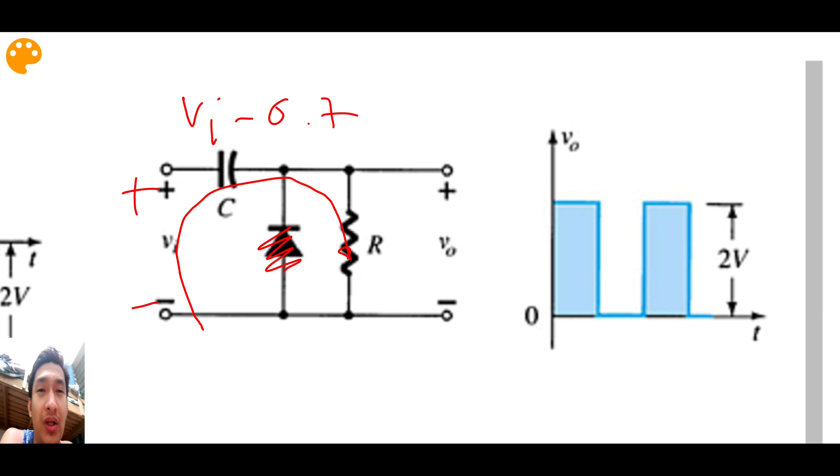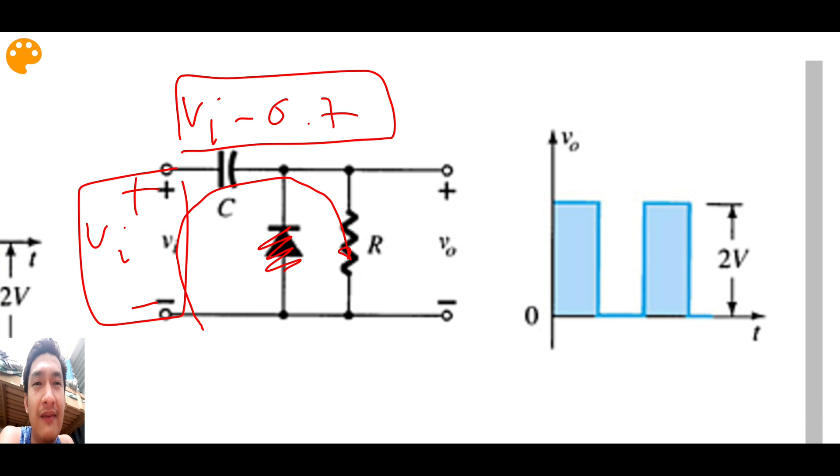So what happens is you have here VI, and then this is in series with another voltage source, you have VI minus 0.7. So somewhat it forms like a battery. So you have VI and then VI minus 0.7. So your VO now is equal to 2VI minus 0.7. So that's why during the positive half cycle you have this one.